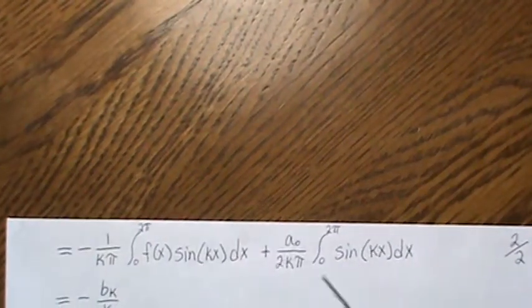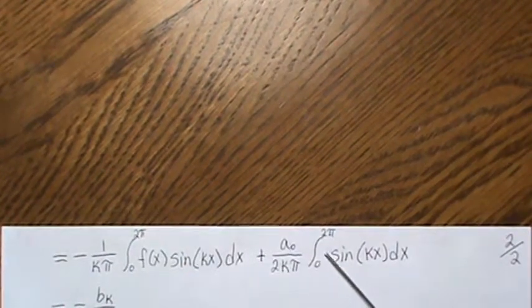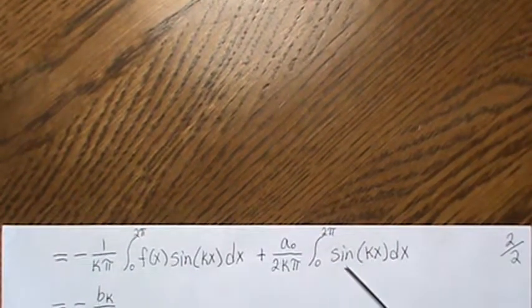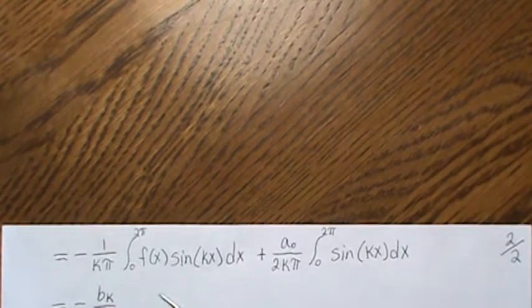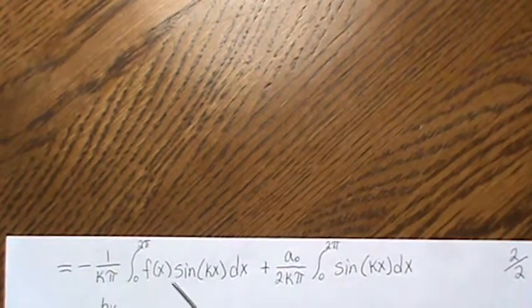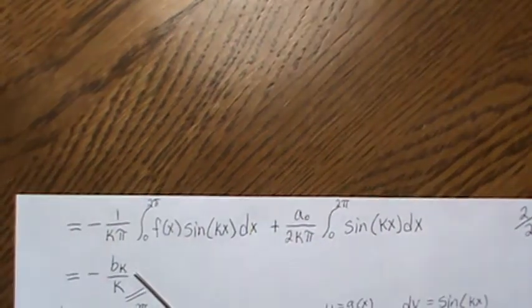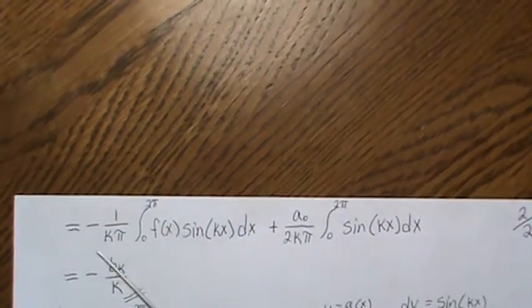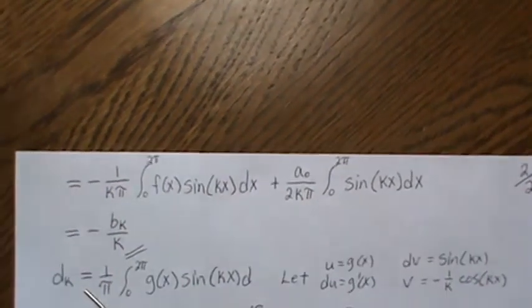So now let's do this one first, because sine is orthogonal to the number one. So this goes to zero, or you just integrate it and you'll show that it's zero. Here, if you take the one over π and this, that's what we were calling Bₖ. So this is equal to minus Bₖ over k.